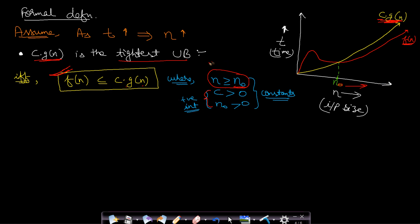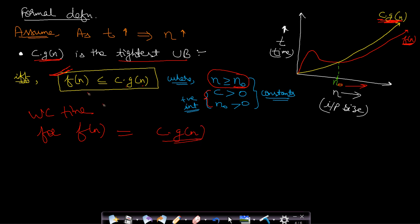If all these conditions are satisfied, then the worst-case time complexity of f(n) — which is the actual runtime of your program — will be c·g(n), since it is the tightest upper bound. Now let us look at an example to understand these concepts better. Assume we are given a function f(n) = 3n + 2. What will be the worst-case time for this f(n)?